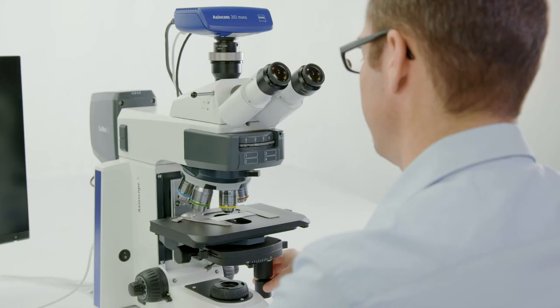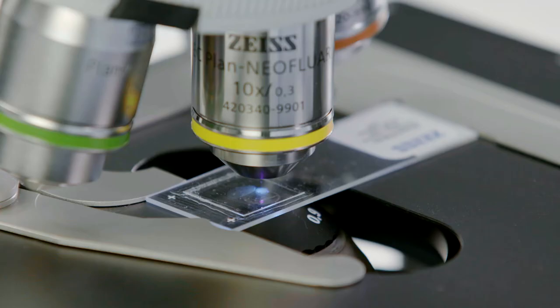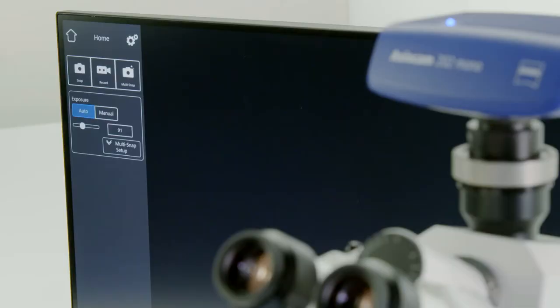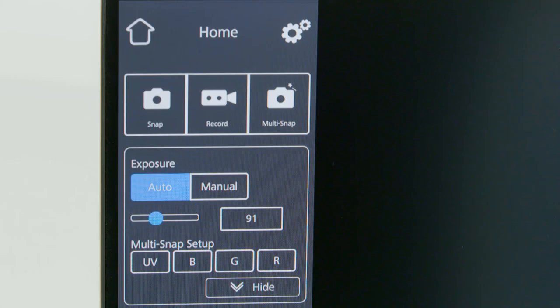Switch to the reflector position containing an appropriate multi-bandpass fluorescence filter, then define the relevant fluorescent LEDs for excitation suitable for your sample via the on-screen display. For the sample shown, it is UV, blue, and green.